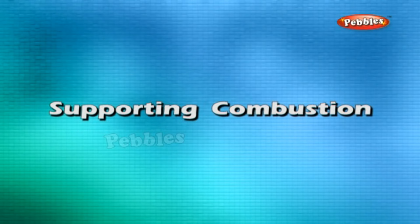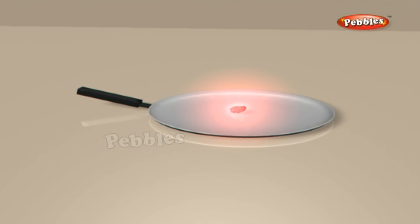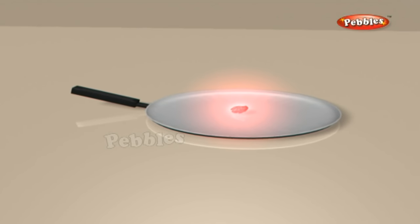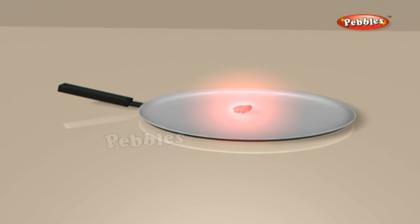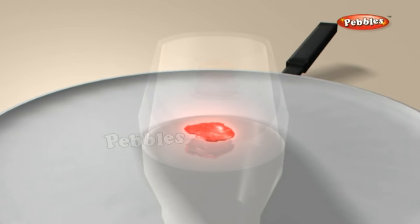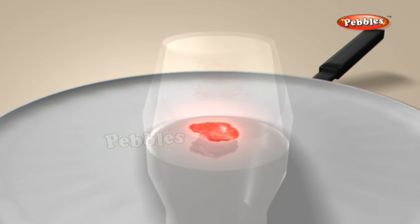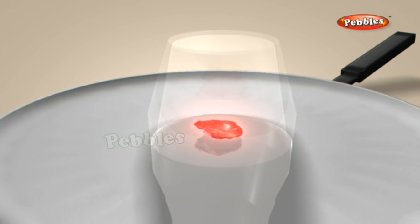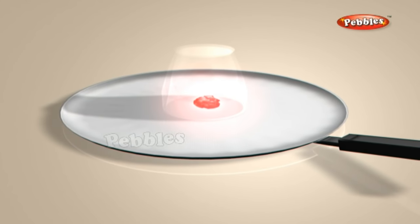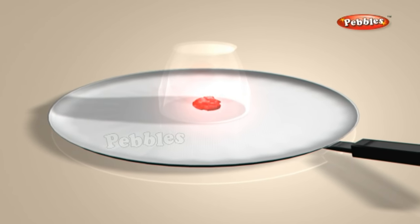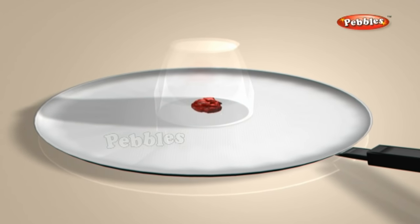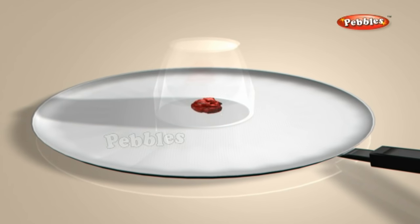Supporting combustion activity: place a piece of burning wood or charcoal on an iron plate or tawa. Cover it with a glass jar, tumbler, or transparent plastic jar. Observe what happens — charcoal stops burning after some time. The reason it stops burning is that there is no air to support burning.